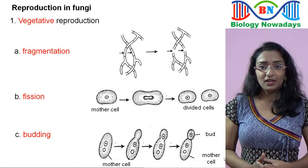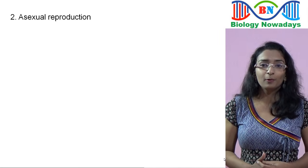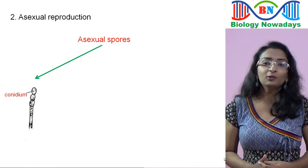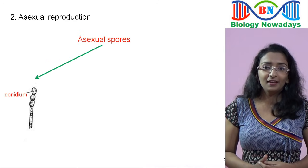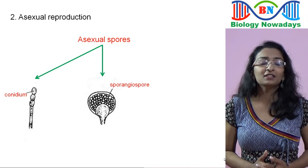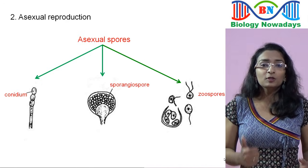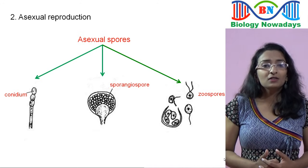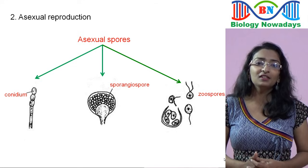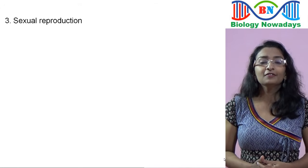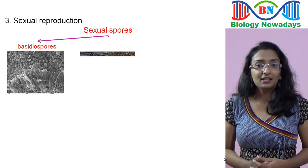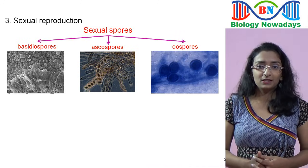Asexual reproduction in fungi takes place through asexual spores like conidia — conidia is the plural form and conidium is the singular form — then sporangiospores and motile zoospores. Zoospores are motile because of the presence of flagella. Sexual reproduction in fungi results in the formation of sexual spores like basidiospores, ascospores, and oospores. These sexual spores are formed inside the fruiting bodies.